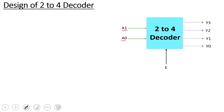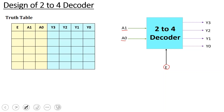For the 2-to-4 decoder: the problem statement specifies two inputs, 4 outputs, and an enable signal. Now the truth table is constructed. The inputs are A1 and A0; the outputs are y3, y2, y1, and y0.